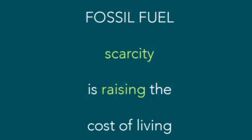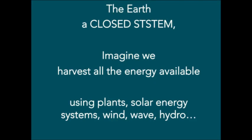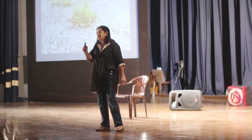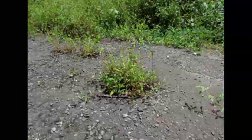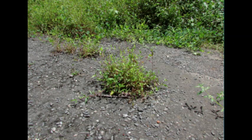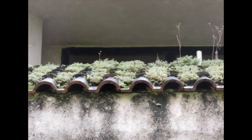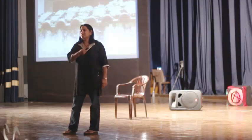Because of energy scarcity, the cost of living is also rising. The earth is a closed system, and if we harvest all the energy we've got we'd be pretty sustainable. It's not hard to grow things — they happen on their own. These plants require the same nutrients we do and they're doing it on their own.